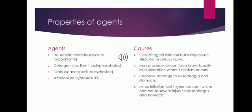Different types of alkali agents and their effects: Household bleaches, such as sodium hypochlorite, produce esophageal irritation but rarely cause strictures or serious injuries. Detergents, constituted of sodium tripolyphosphate, produce serious tissue injury, usually mild ulceration without stricture. Drain cleaners, which are sodium hydroxide, produce extensive damage to the esophagus and stomach. Ammonium hydroxide at 3% causes minor irritation, but higher concentrations can cause severe injury to the esophagus and stomach.